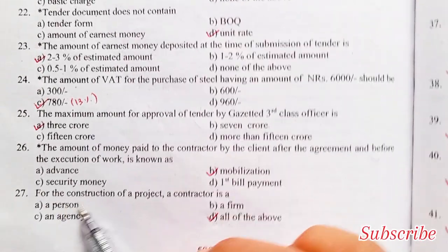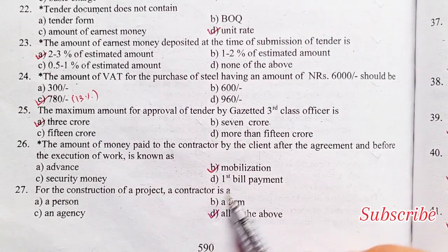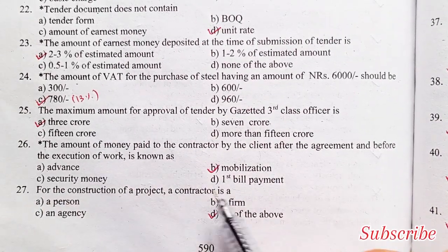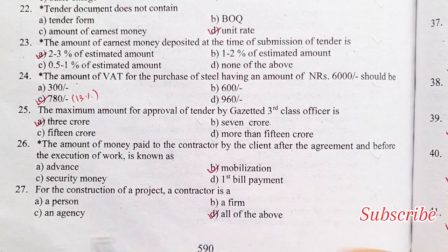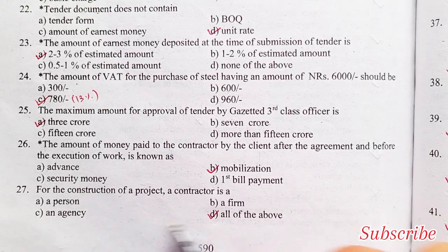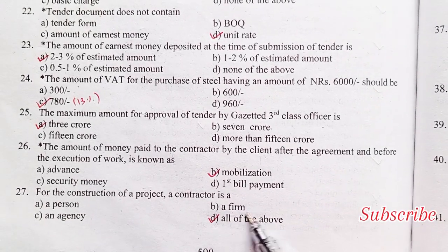For the construction of a project, a contractor is: a person, a firm, an agency, or all of the above. Option D is the right answer — all of the above.